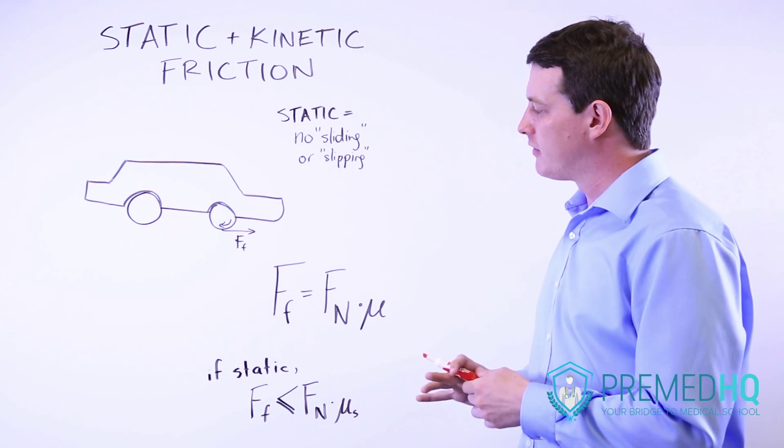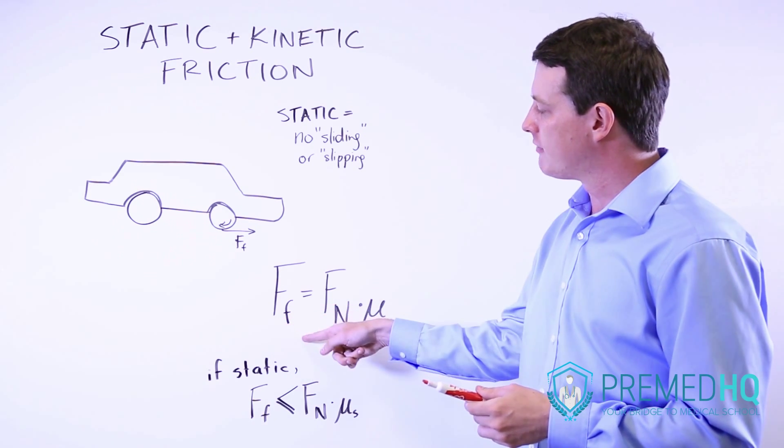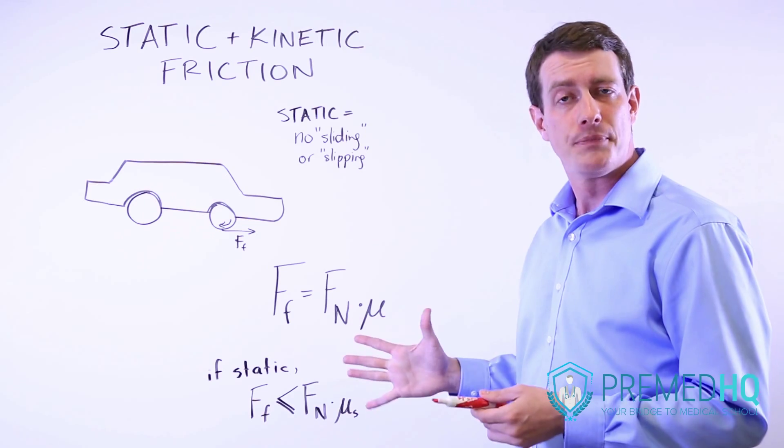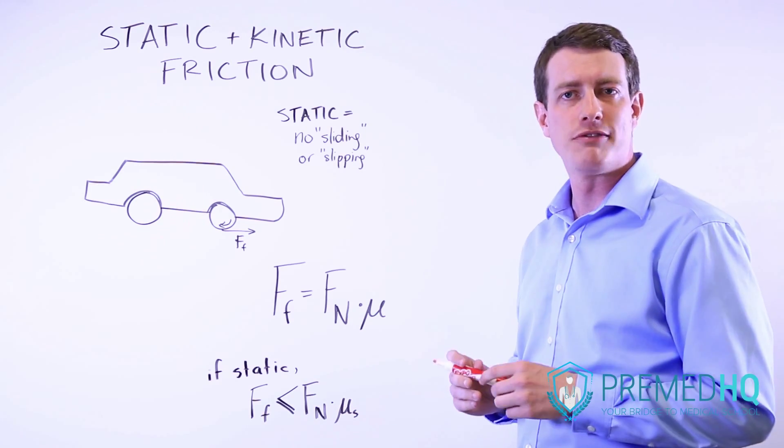The formula for friction, the general formula, is that the frictional force equals the normal force times mu, and mu is your frictional coefficient.